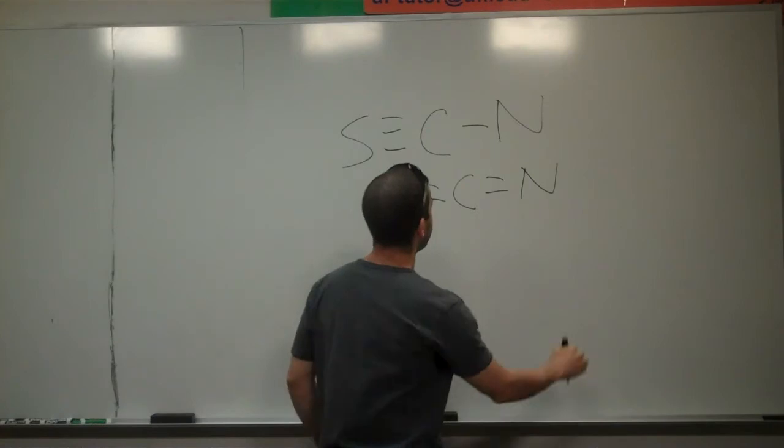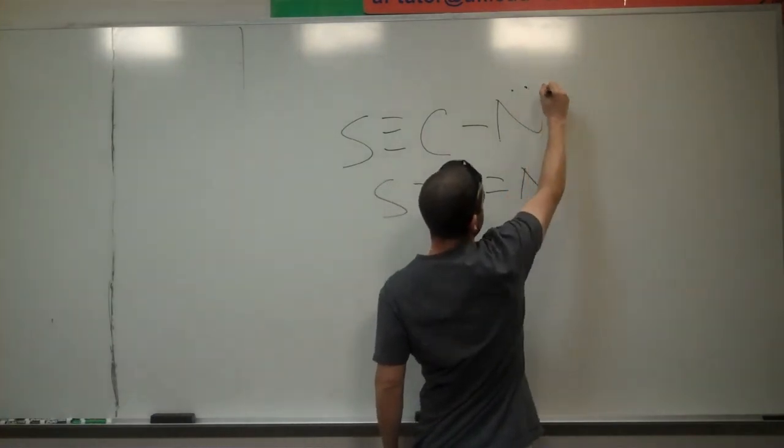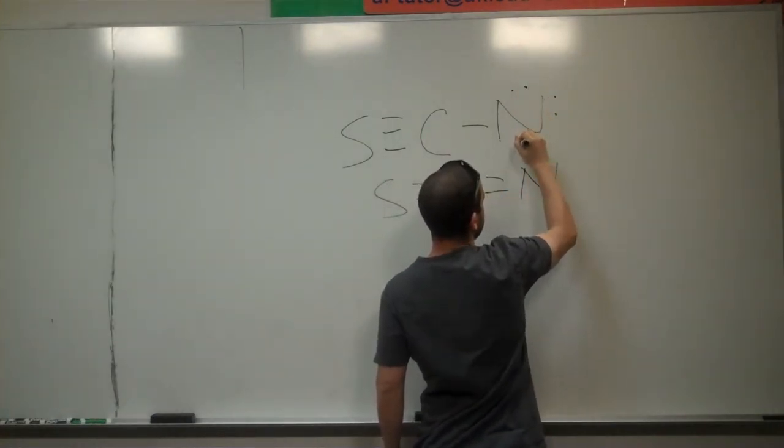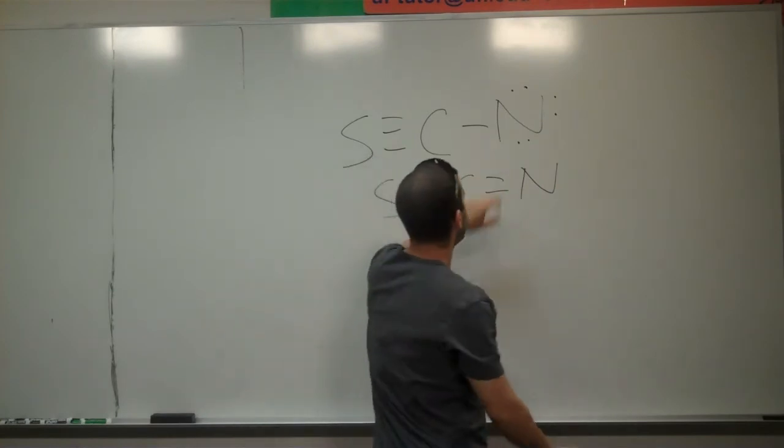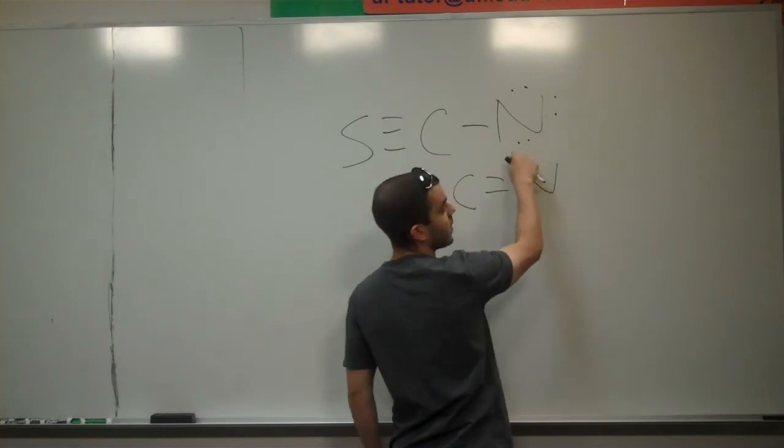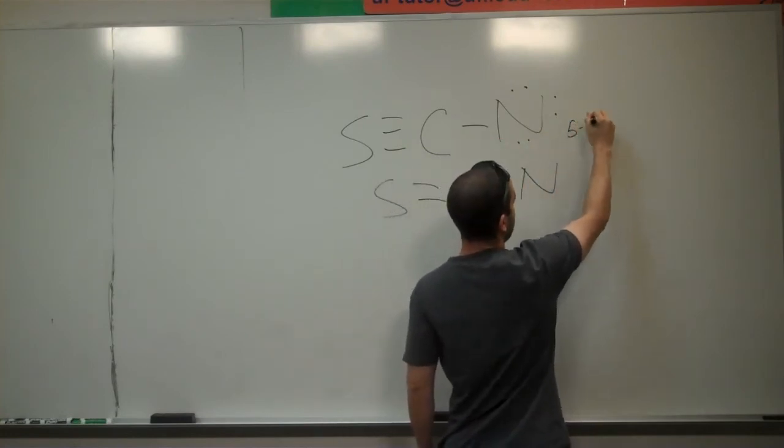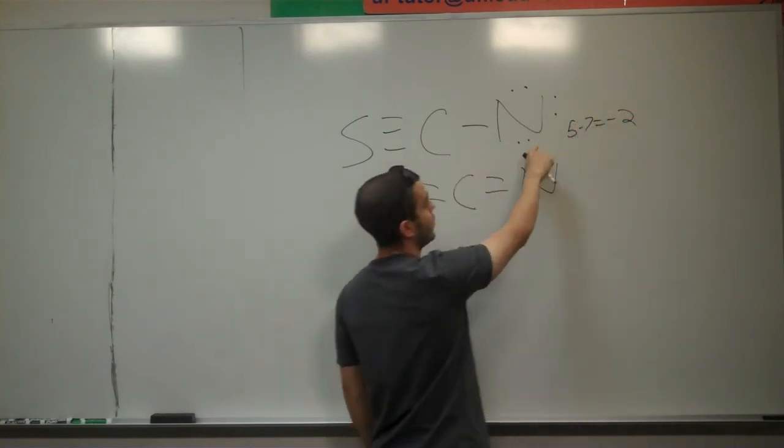So now we've got these two here. We could put electrons like this for nitrogen, which would give this five minus one, two, three, four, five, six, seven, and negative two formal charge.